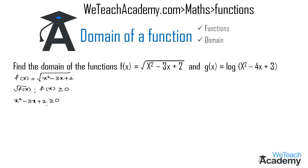First let us multiply the coefficient of x² and the constant term. By multiplying 1 and 2 we get 2, and the factors of 2 are 2 × 1. Now we have to add or subtract these factors so that their sum equals the coefficient of x, which is minus 3.